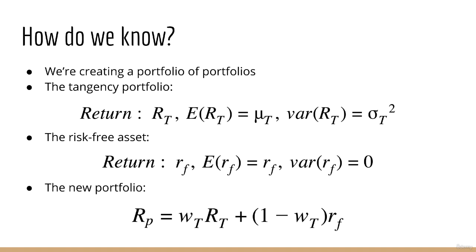The risk-free asset has return r_f and variance zero — note that r_f is known so it's not random. Our new portfolio is some combination of the two: r_p equals w_t times r_t plus (1 − w_t) times r_f, where w_t tells us how much to invest in the tangency portfolio and (1 − w_t) tells us how much to invest in the riskless asset.